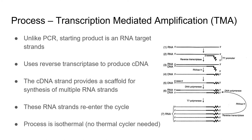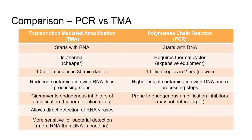Additionally, the entire TMA process is isothermal — there's no need to cycle temperatures. TMA requires less equipment, meaning it is cheaper and much faster than PCR. Because RNA is generally more labile than DNA, the risk of contamination is actually decreased, and there are fewer steps to setting up TMA than PCR. TMA also avoids issues with endogenous inhibitors such as hemoglobin and urea that can interfere with PCR-based amplification.